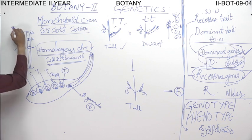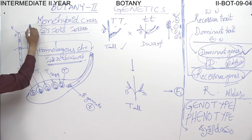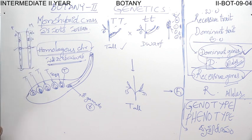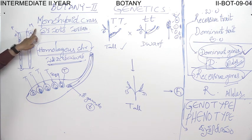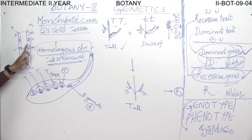One chromosome of the pair belongs to the paternal chromosome and the other belongs to the maternal chromosome. This is also studied in the meiosis process.